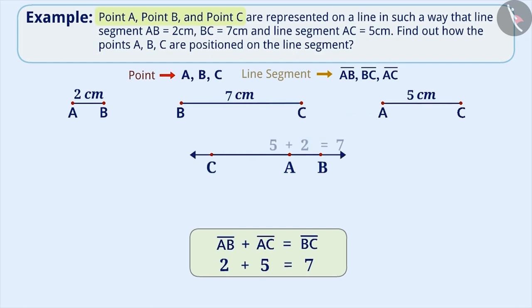If we put AB and AC on a line in this way, we get the line segment BC of length 7 cm. On arranging them, we get point A in between point B and point C.